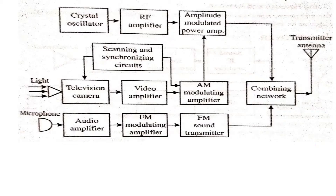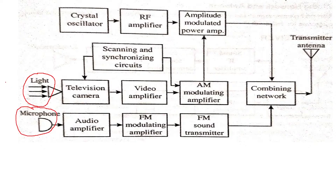Now let's start with the basic function of a transmitter. A basic TV transmitter has two inputs: one from the camera, which is the light signal, and one from the microphone, which is the sound signal. So we have a video input and a sound input.